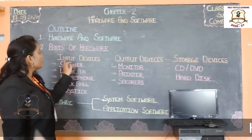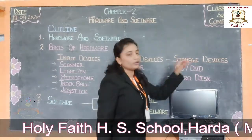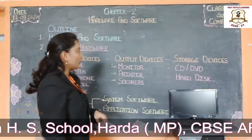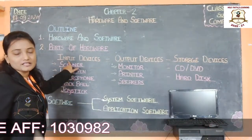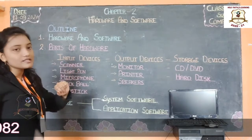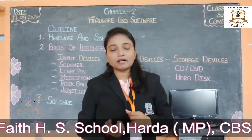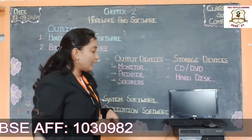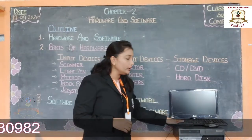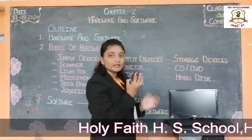There are three types of hardware parts: input devices, output devices, and storage devices. Input devices are the hardware that are used to insert words, numbers, or pictures into a computer — like keyboard and mouse.